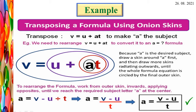Here the transposing method is used. Given one equation: V = U + AT. Here A is the inner part. The outer parts are U, V, and T. So we want to get the inner part A, and we have to remove the outer parts V, U, T. Here the transposing a formula using onion skins method is applied.